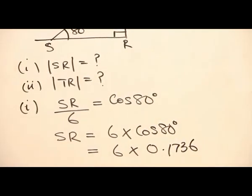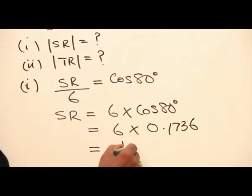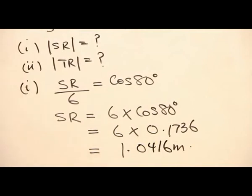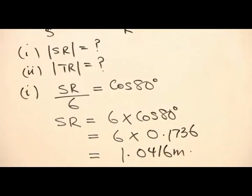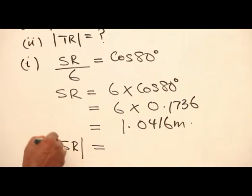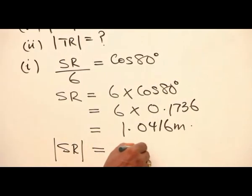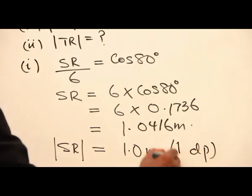Multiplying this out, eventually we have 1.0416 meters. We are told to correct this to 1 decimal place. So, the length SR will be equal to 1.0 meters, corrected to 1 decimal place.